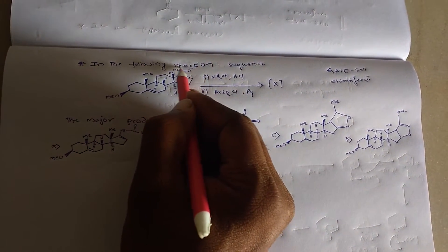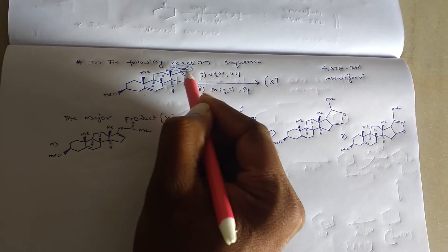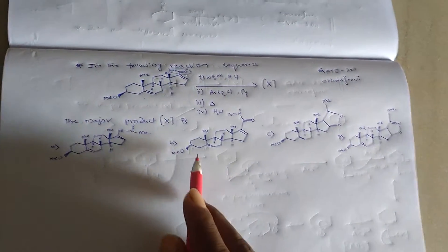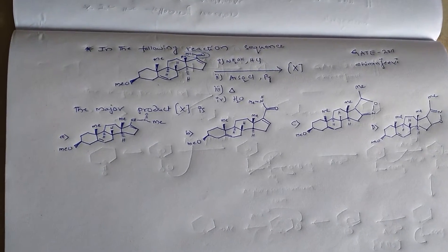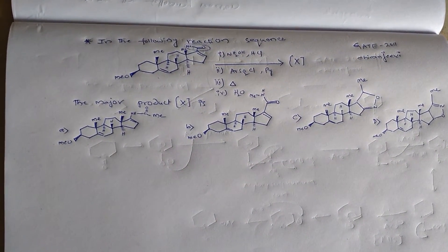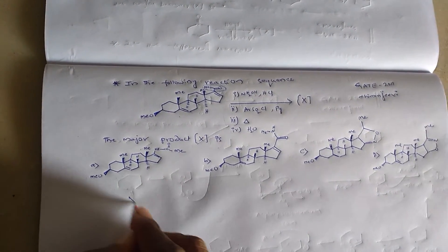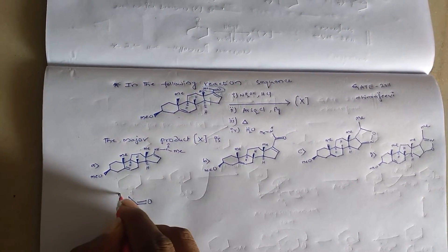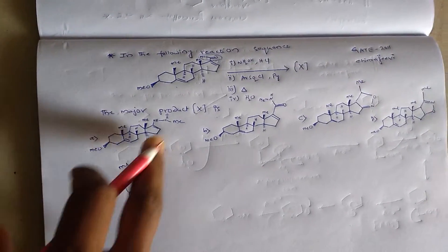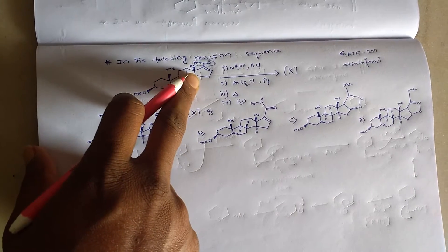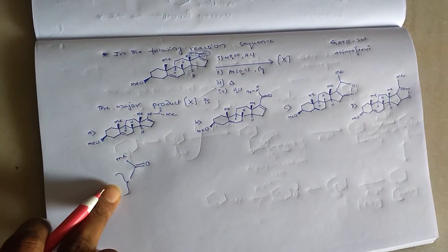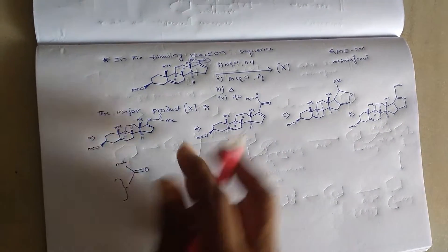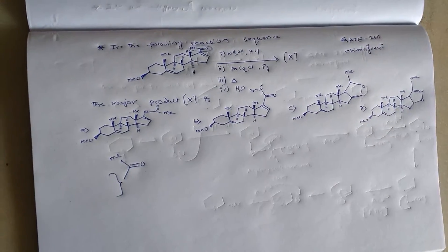We have a carbonyl group as the functional group, and these are the reagents with four options given. We will go step by step and solve the problem. For convenience, I am writing only the functional group — all other moieties remain the same throughout the total reaction with no change. So I am keeping those constant and just taking the functional group which is going to react.